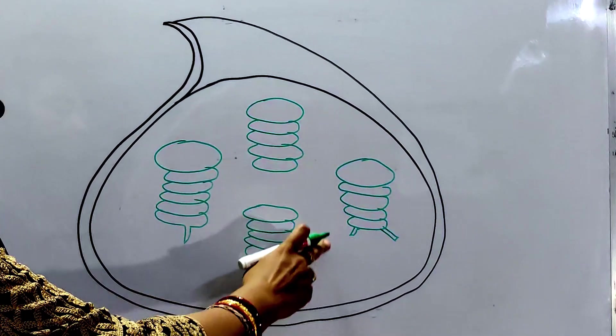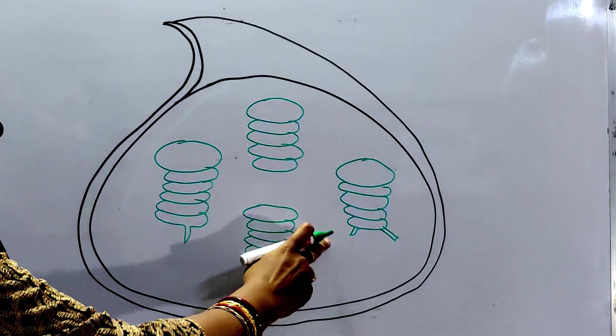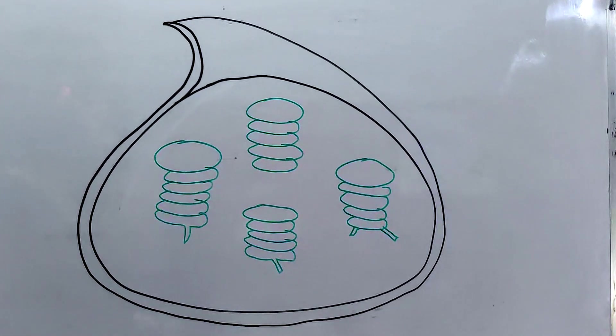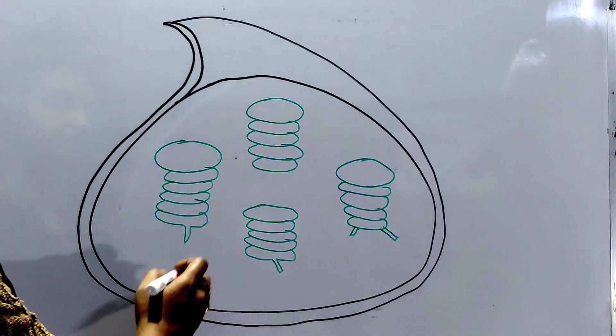These are piled and the granum together constitutes the grana. Each granum is composed of piles of thylakoids. So, how they are interconnected? With the help of fret.